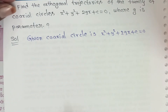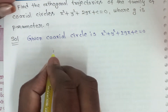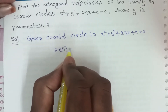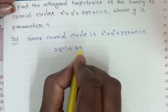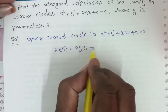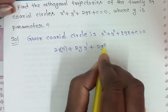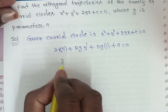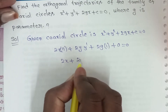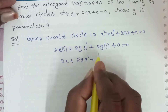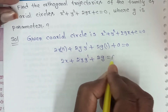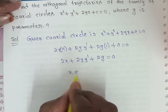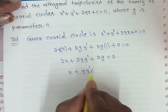Differentiating with respect to x: d/dx of x² is 2x, inner derivative of x is 1. Plus d/dx of y² is 2y, inner derivative of y is dy/dx. The constant c has derivative 0. So we get 2x + 2y·y' + 2g = 0. Taking 2 as common factor: x + y·y' + g = 0.